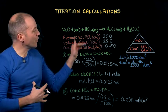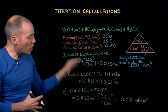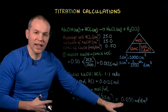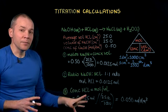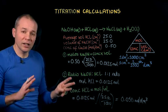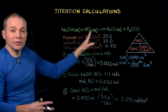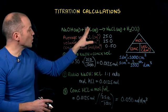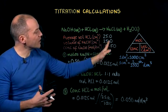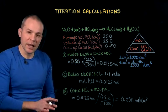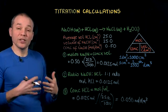So we've used the volume of the hydrochloric acid and the volume and concentration of the sodium hydroxide to work out the concentration of the hydrochloric acid using this three-step strategy. I've used fairly straightforward numbers here, but the strategy is the same regardless of the values you get. It might be that your ratio is not one-to-one — you might get a two-to-one ratio, so the moles of acid would be half the moles of sodium hydroxide. And you might not get nice easy numbers like 25.0, but the strategy is the same. That's how we can calculate the concentration of a solution using a titration calculation.